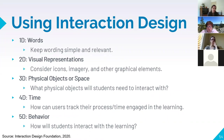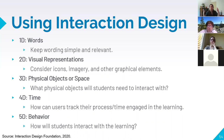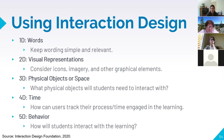Interaction design has five things to keep in mind. First: wording — keep wording simple and relevant, thinking about the grade level and cognitive level of your learners. Second: visual representations — consider icons, imagery, and graphical elements that help students understand where you're going. Third: physical objects or space — what will students need to interact with? Is their computer enough? Will they also need an internet connection, pen and paper, or other materials to gather before they can have a good experience?